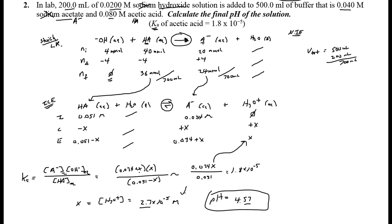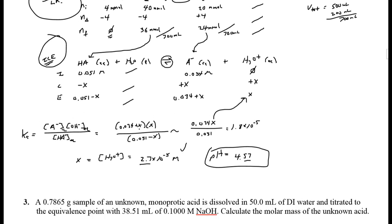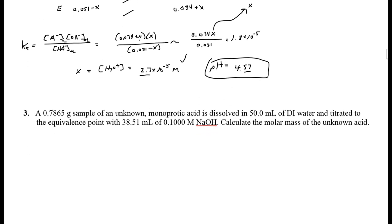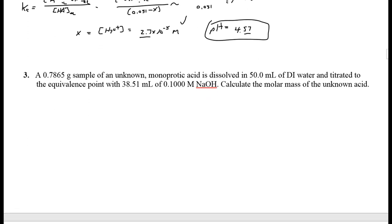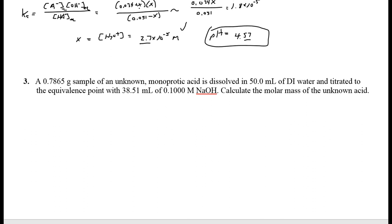That's a great example of using stoichiometry followed by ICE — a really important type of problem. You see this pattern a lot in titrations, and it's very valuable to be able to solve it.